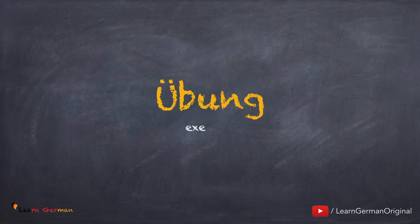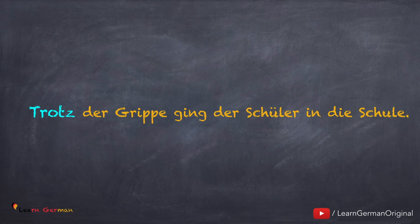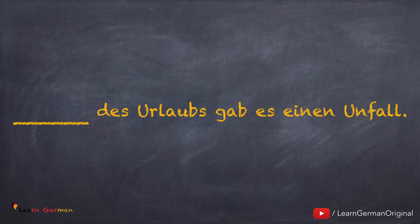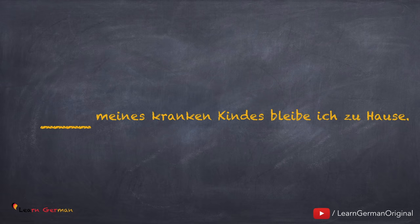Jetzt machen wir eine kleine Übung. Ergänze bitte die richtige Präposition: Wegen, Trotz oder Während. Die richtige Antwort für den ersten Satz ist: Trotz der Grippe ging der Schüler in die Schule. Die Antwort für den zweiten Satz ist: Während des Urlaubs gab es einen Unfall. Und die Antwort für den letzten Satz ist: Wegen meines kranken Kindes bleibe ich zu Hause.